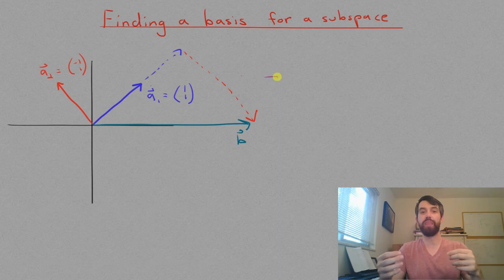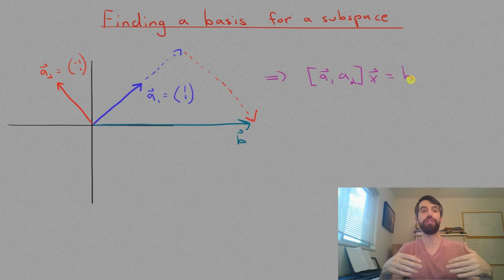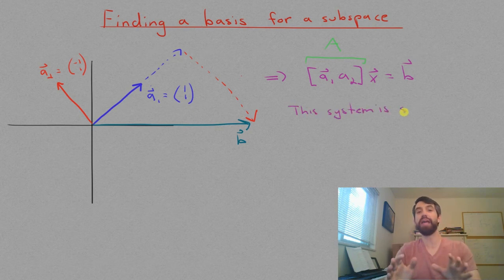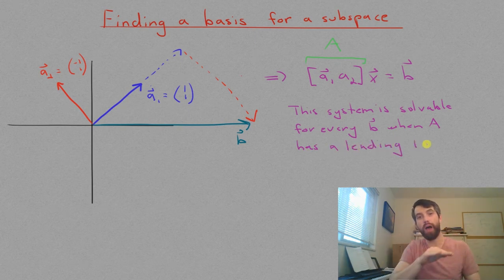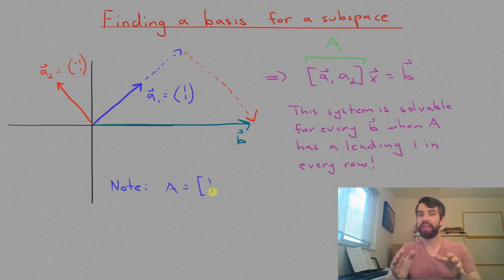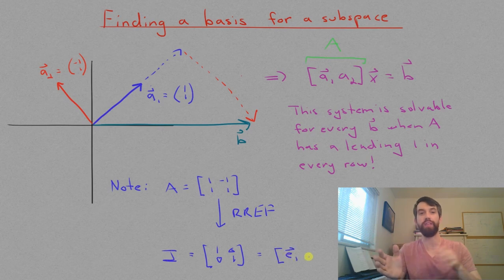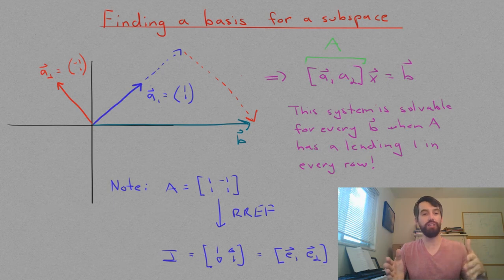Algebraically, this meant that the matrix whose columns are the A1 and the A2 had a solution for any system AX equals B. Or in other words, when we put the system AX equals B into its RREF form, then there's going to be a leading one in every single row. So, incidentally, notice how the RREF of A just has the columns that are the standard basis vectors, the E1 and the E2?